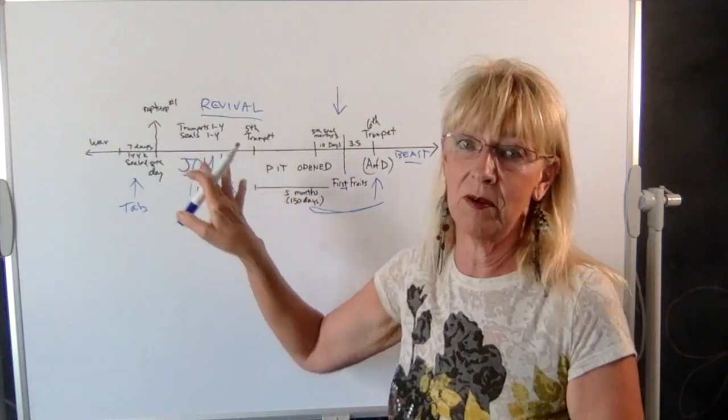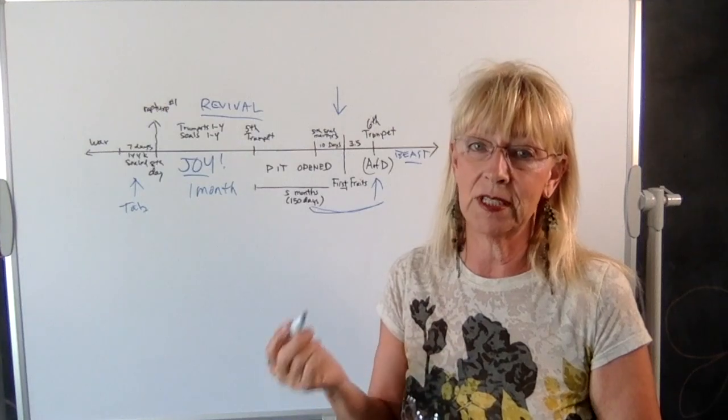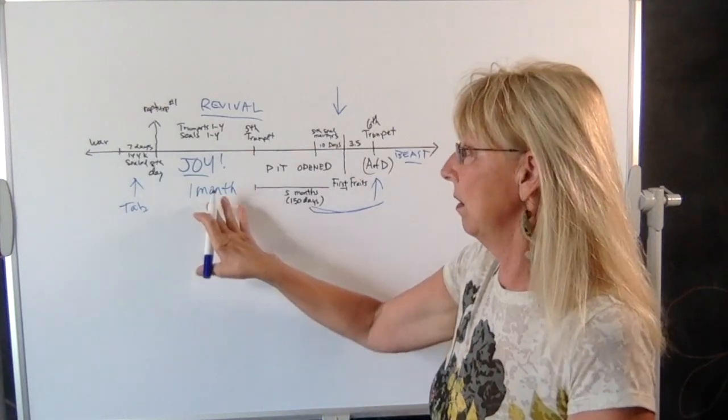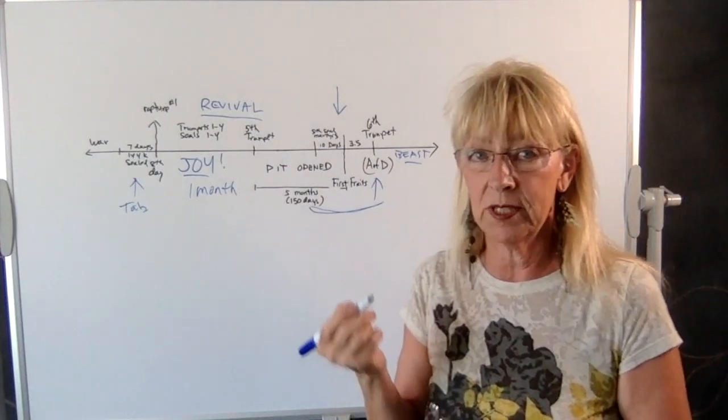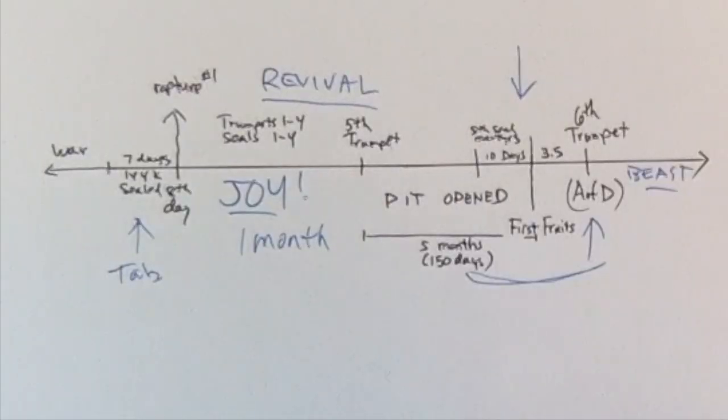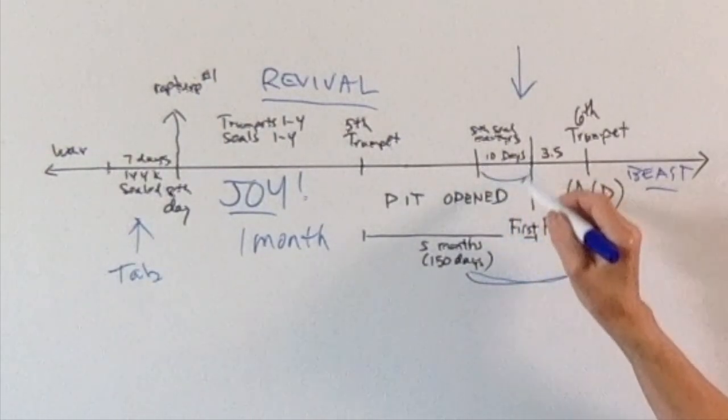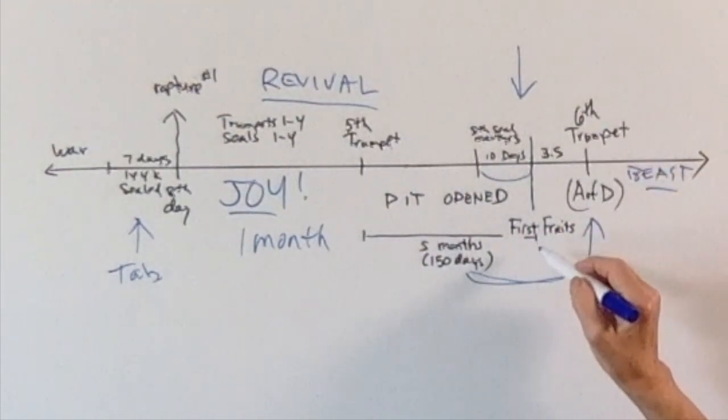There's going to be hard times as the seals are opened with shortages and peace taken from the earth. That's going to affect believers on earth at that time, but they still have the resources connected with the Holy Spirit inside of them. This is the sixth trumpet at the time of the abomination. The 10 days of persecution will be just before this time. The 10 days will end on first fruits.